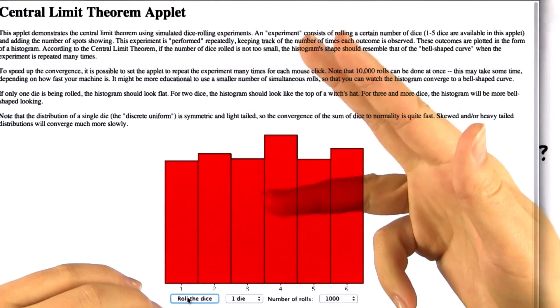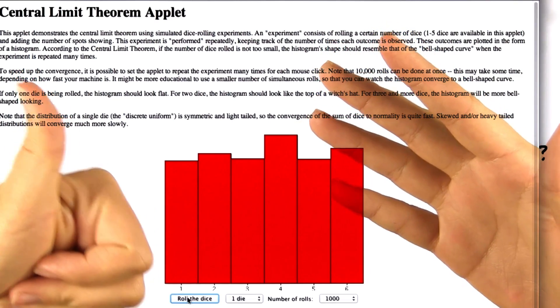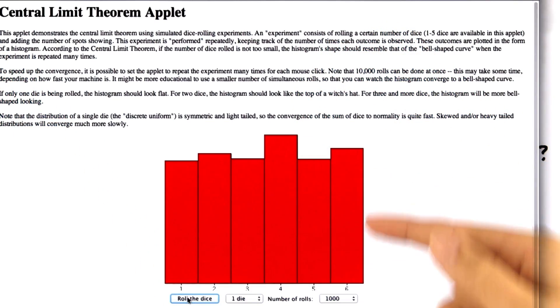one, two, three, four, five, and six all have an equal chance of getting selected. And so our distribution is uniform.